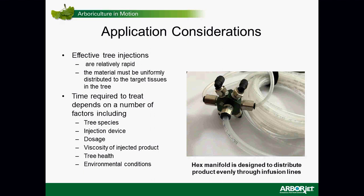Effective tree injections are relatively rapid — it's nice to approach a tree, administer the injection, and be done in a few minutes. But that's only part of the story. Getting the material into the tree is important; getting uniform distribution into the canopy is even more important. Finally, that systemic distribution of product in the tree has to be effective against your target organism, whether an insect or disease.